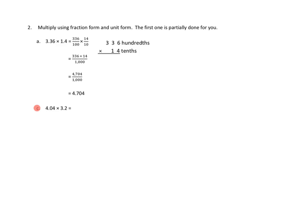Let's take a look at problem number 2. Problem number 2 asks us to multiply using fraction form and unit form. The first one is partially done for us. 3.36 — they said that's the same as 336 hundredths, written here in unit form. Times 1.4, or 1 and 4 tenths, which is the same as 14 tenths. They multiply out 336 times 14, and that's 4,704. Our units are 100 times 10, or 1,000 — hundreds times tenths would be thousandths. So the answer is 4.704, or 4 and 704 thousandths.